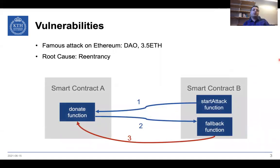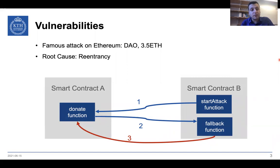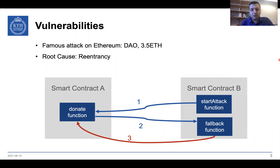The smart contracts, like any other program or piece of code, can have vulnerabilities that can be exploited. In fact, a famous attack on Ethereum in 2016 called an attack on DAO caused loss of 3.5 million Ether. The root cause of this attack was re-entrancy vulnerability.